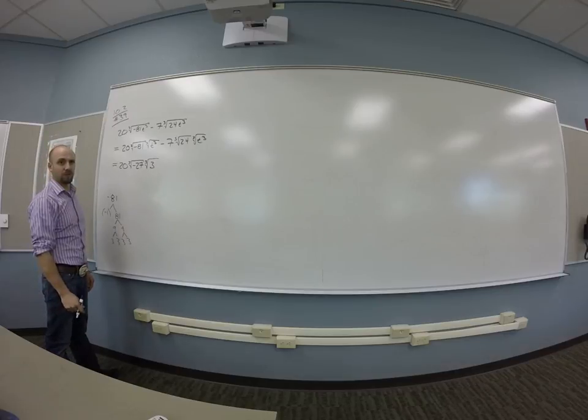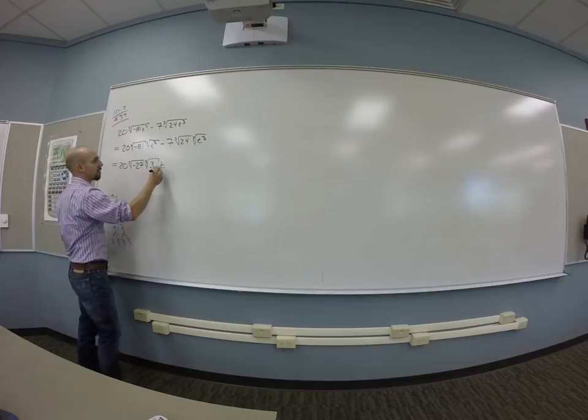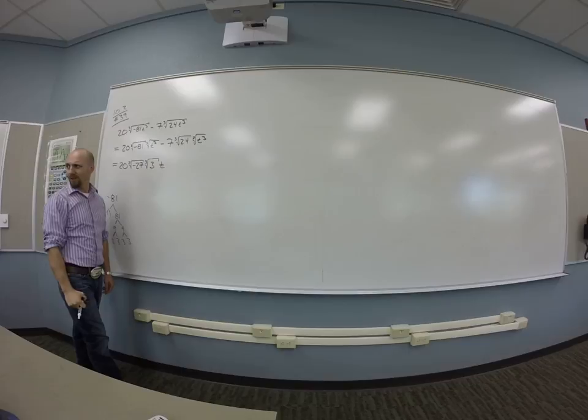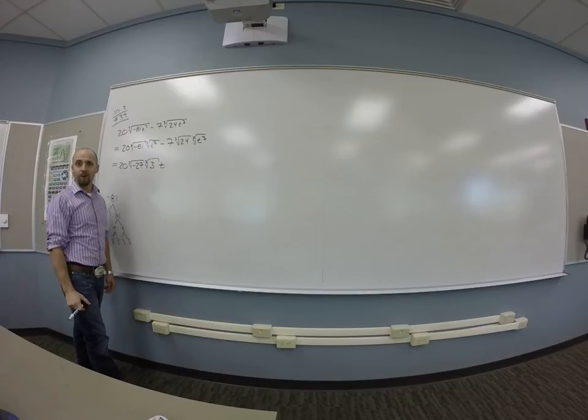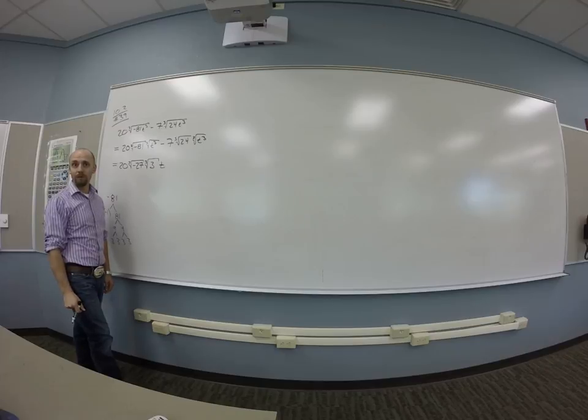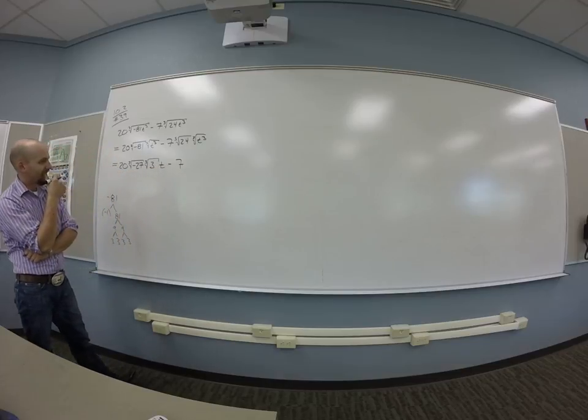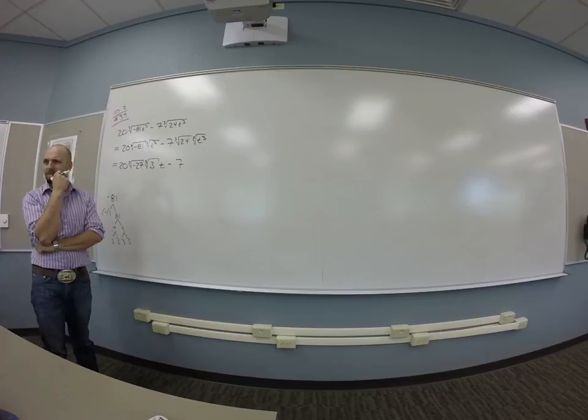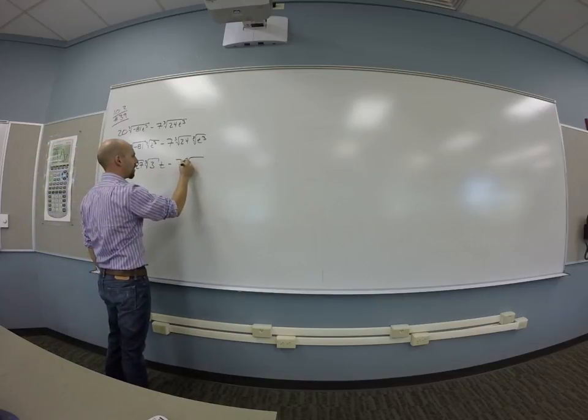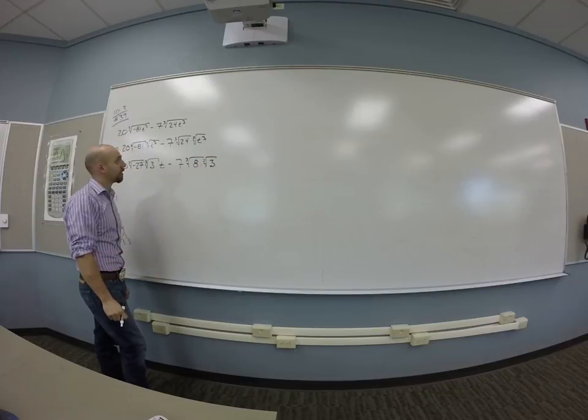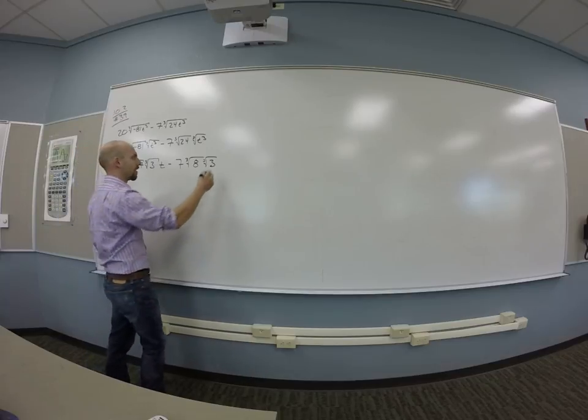What's the cube root of t cubed? t. Do I need to worry about a plus or minus on that? Or an absolute value maybe? When do I worry about that? On those even things? When the number's even, the power's even. I'm not taking an even power here so I'm not worried about that. And then there's minus 7, what's 24? 24 something cube that I know about times some other stuff maybe? 8. So, 24 is 8 times 3, so I used my rule to break it up there. What was the cube root of t cubed? t.